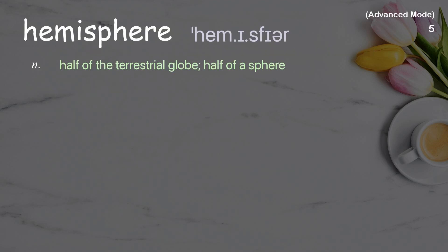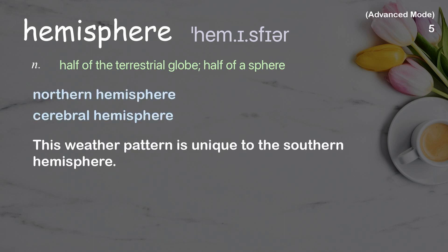Hemisphere. Half of the terrestrial globe, half of a sphere. Examples: Northern Hemisphere, Cerebral Hemisphere. This weather pattern is unique to the Southern Hemisphere.